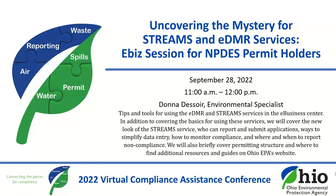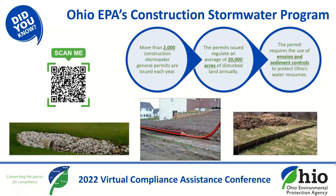Ohio EPA's 2022 Virtual Compliance Assistance Conference has 24 sessions over two weeks. Today we have three sessions focusing on NPDES permits. Registration information and the conference agenda are located on Ohio EPA's conference webpage. Did you know that Ohio EPA's Construction Stormwater Program is designed to permit and document construction activities in the state and require practices that keep pollutants out of the streams? More than 2,000 construction stormwater general permits are issued each year regulating an average of 20,000 acres of disturbed land. The general permit requires the use of erosion and sediment controls to protect Ohio's water resources. You can scan the QR code on this slide to learn more about Ohio EPA's stormwater programs.